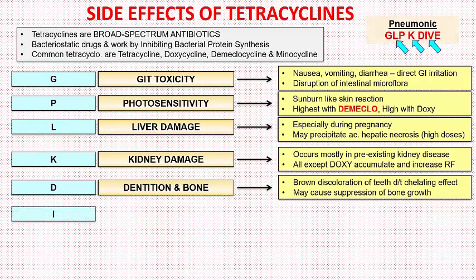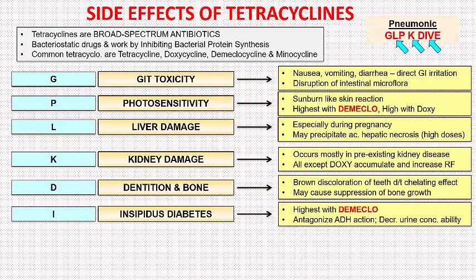Next we have the letter I. I stands for diabetes insipidus. The highest incidence of diabetes insipidus is with demeclocycline. Demeclocycline antagonizes ADH action and decreases urine concentrating ability.